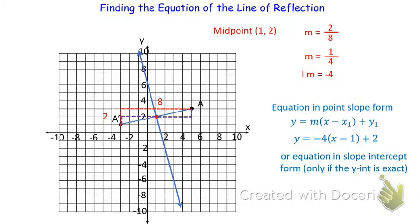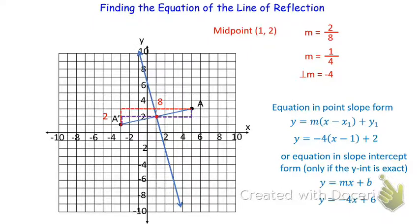We could also use slope-intercept form, but only if the y-intercept is exact. We know the slope of this perpendicular line is negative 4, so if we go up 4 units and 1 to the left from our midpoint, we see it touches at (0, 6) — a nice, clean y-intercept. Therefore we could use y equals negative 4x plus 6. However, it's easier to just use point-slope form, because you're always going to know the midpoint.